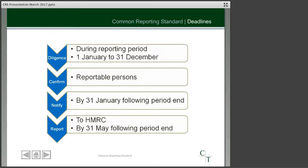Talking briefly about deadlines: the due diligence should really be carried out during the reporting period — during the year to the end of December — and then you should confirm who are the reportable persons. If you are reporting somebody, you have to notify them that they are being reported to HMRC, and you need to do this by the 31st of January following the period end. We're already past that particular deadline, so if you are going to have to report somebody for the 2016 year, you should be advising them as soon as possible. The final deadline for making the report to HMRC themselves is the 31st of May following the period end, and it is important that if you haven't considered CRS, you act very quickly.